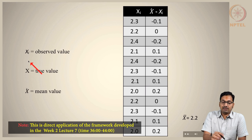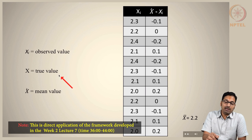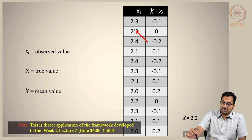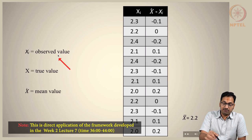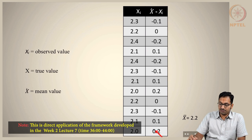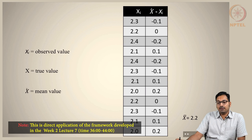Let xi be the observed value — the measurements you are trying to make — and capital X is the true value, meaning where you want to be as close as possible after your measurement. x-bar is the mean value trying to pick up what is the true value. You determine the mean from all observed values and take the difference between this mean and every observed value, understanding the residuals — how far each measurement is from the sample mean. This helps assess accuracy and precision.